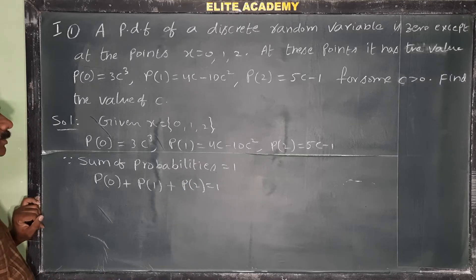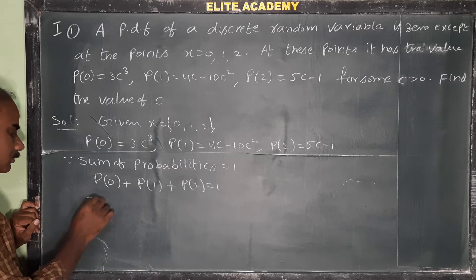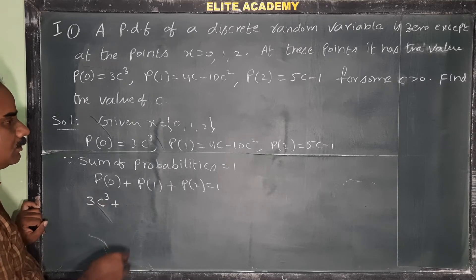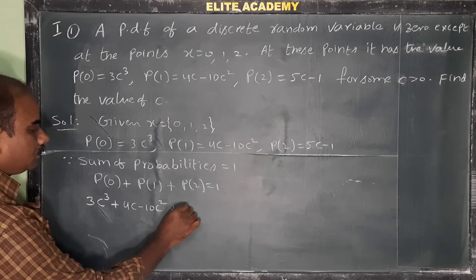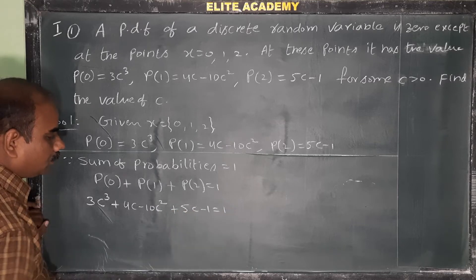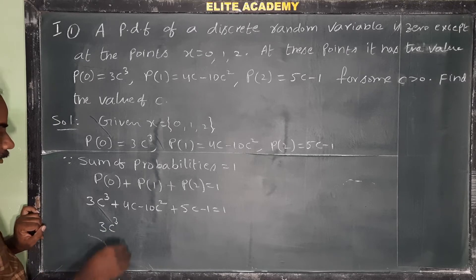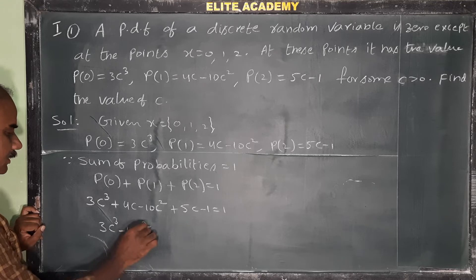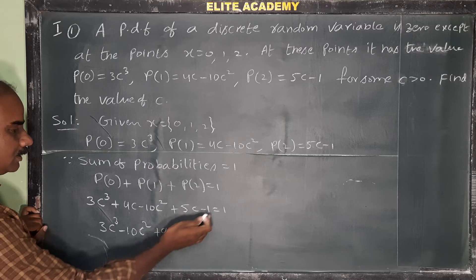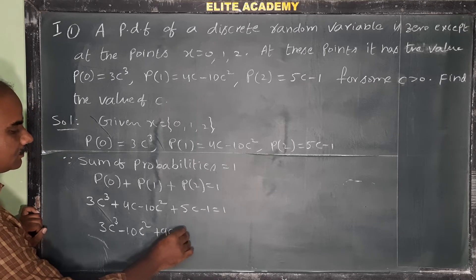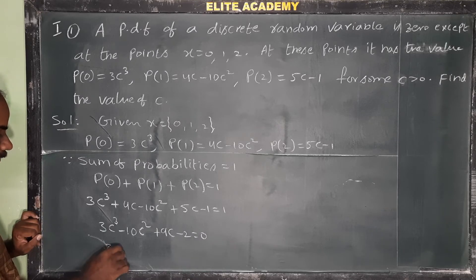Substituting: P(0) = 3c³, P(1) = 4c - 10c², P(2) = 5c - 1, so 3c³ - 10c² + 4c + 5c - 1 = 1. Collecting terms by highest power: 3c³ - 10c² + 9c - 2 = 0.